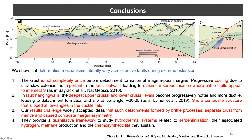To summarize, we show that the deformation mechanisms change laterally across active faults during extreme extension, and that the crust is not completely brittle before detachment formation at magma-poor margins. Progressive cooling in the footwalls leads to maximum serpentinization where brittle faults appear to intersect S. In the hanging walls, the deepest upper crustal and lower crustal levels become progressively hotter and more ductile, leading to detachment formation and slip at low angle. We therefore interpret that S is a composite structure that slips at low angles in the ductile field. These results provide a quantitative framework to study hydrothermal systems related to serpentinization, their associated hydrogen and methane production, and the consequences for chemiosynthetic life.